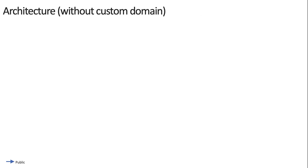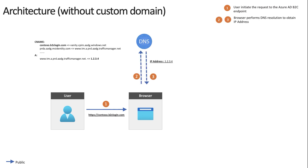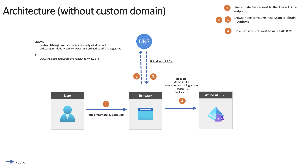Let's take a look at the request-response cycle from an architecture standpoint without using a custom domain. A user sends a request through a browser to the Azure AD B2C endpoint — in this case, contoso.b2clogin.com. The browser performs DNS resolution to get the IP address against that domain. Once the browser has the IP address, it performs a GET request to that host address along with certain headers and possibly some cookies. In response, Azure AD B2C sends HTML, CSS, and other artifacts along with headers and cookies.